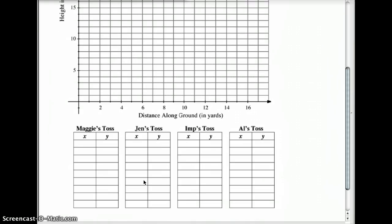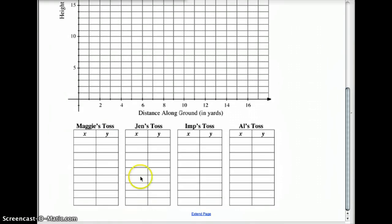You're also going to need to do an x, y chart. You're going to need it for Maggie's toss, Jen's toss, Imp's toss, and Al's toss. Pause the video, and make sure you get all that put down, and I'll see you back when you get back.